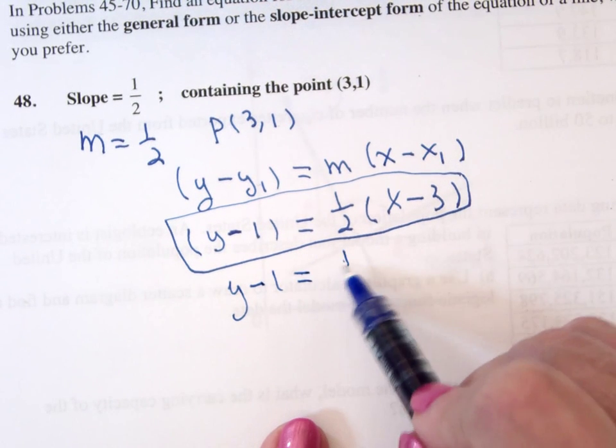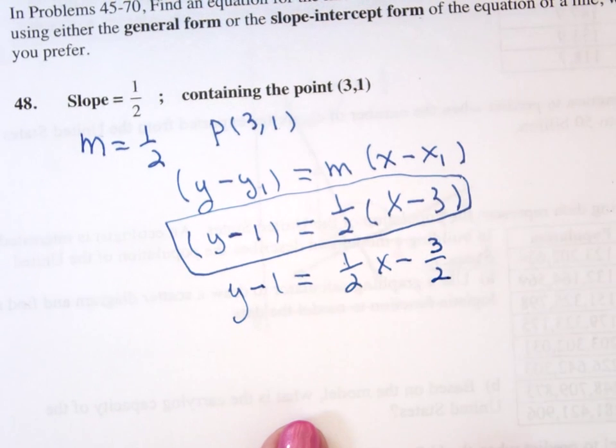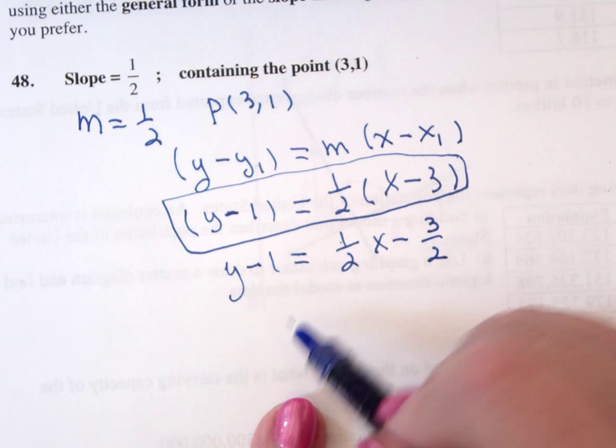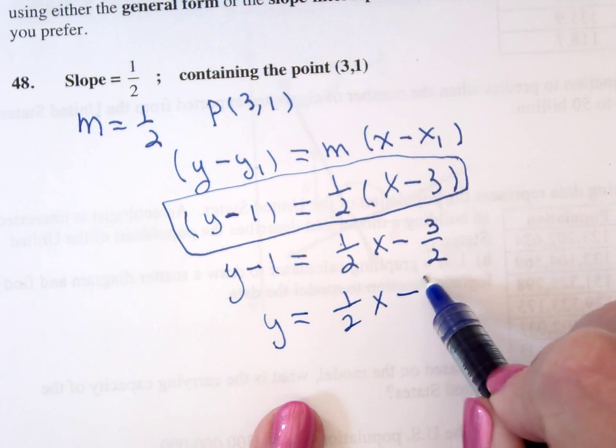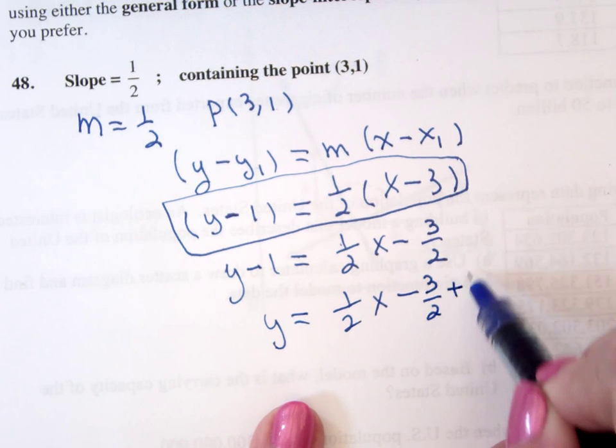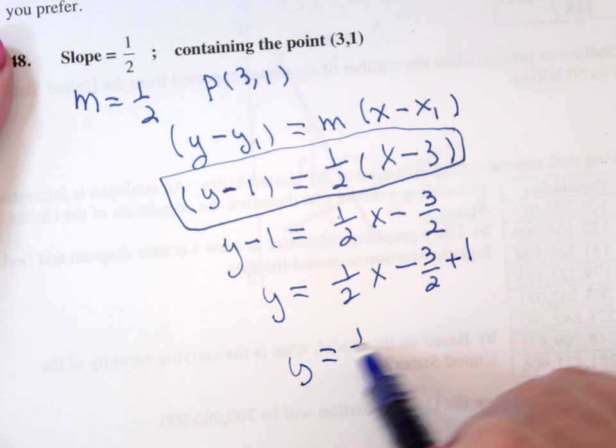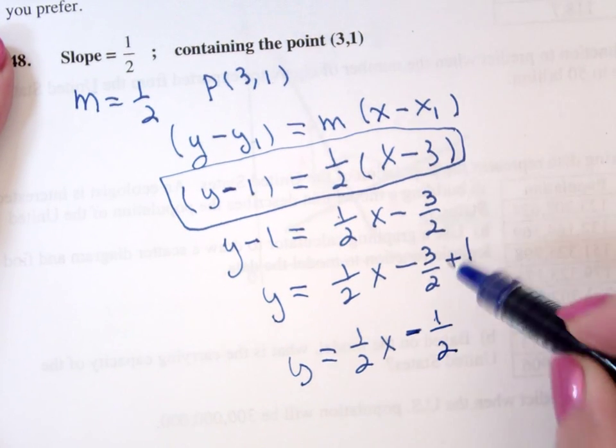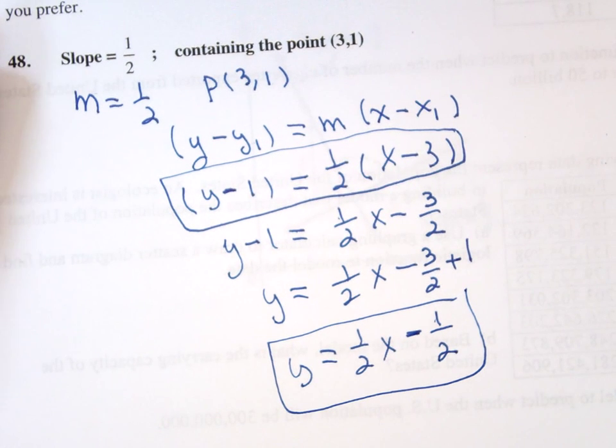So if I'm going to put it in slope-intercept form, I have to remove parentheses, and then solve for y. So this gives me that y equals one half x minus one half, and that would be it in slope-intercept form.